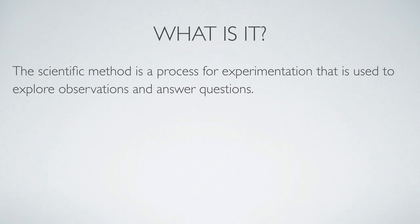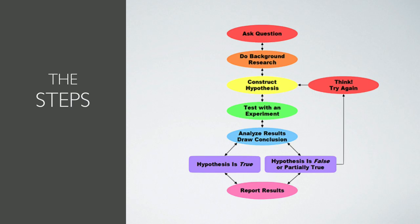But first, let's take a refresher course on the scientific method. The scientific method is a process for experimentation that is used to explore observations and answer questions. By following a consistent set of steps, we have a system to yield repeatable results. Let's break down each step.